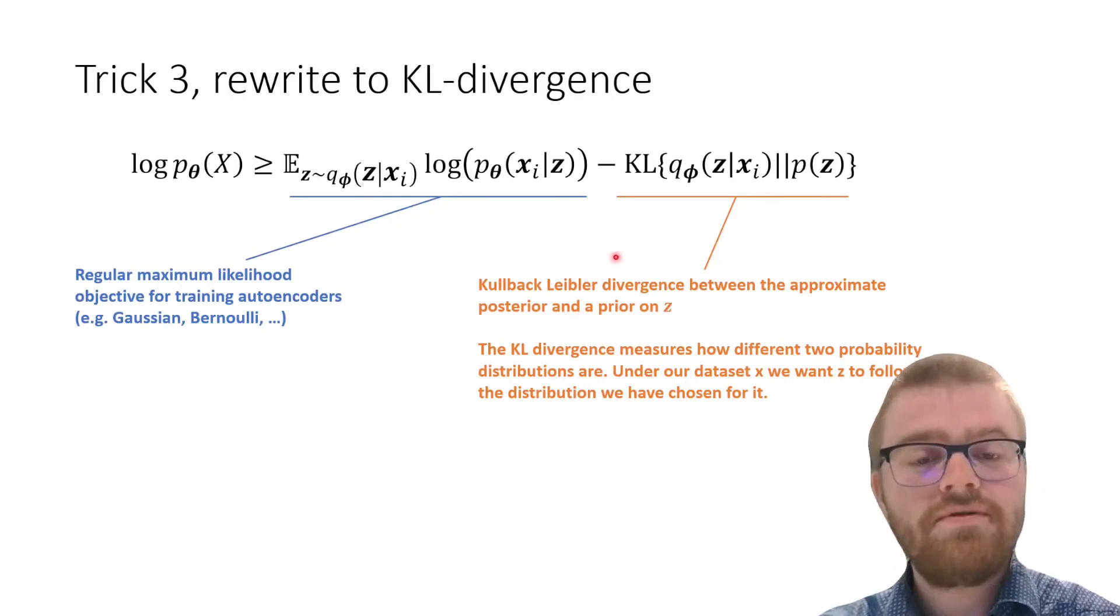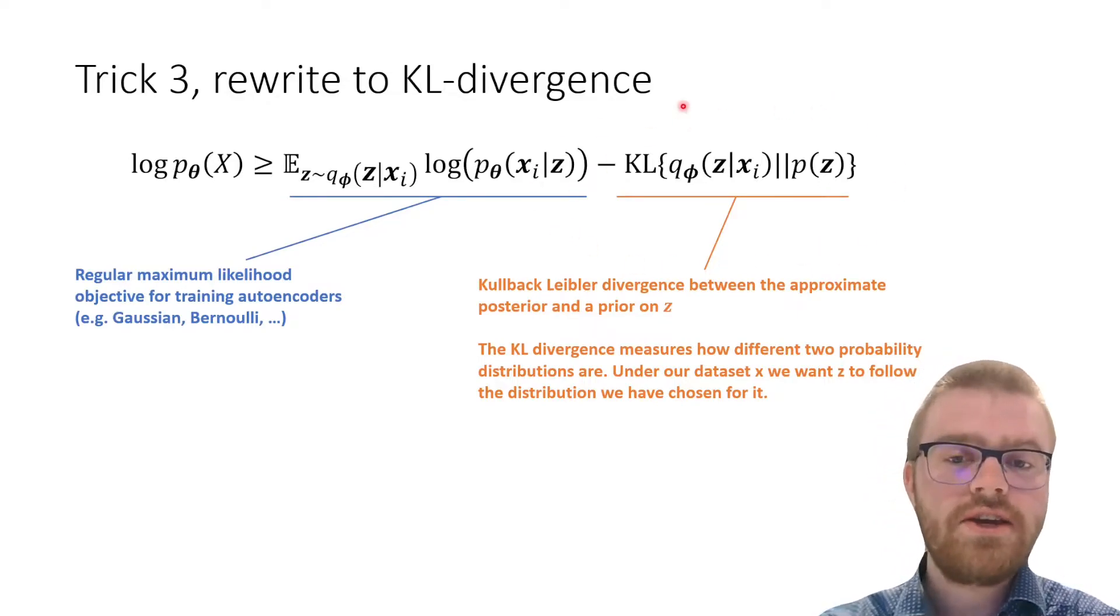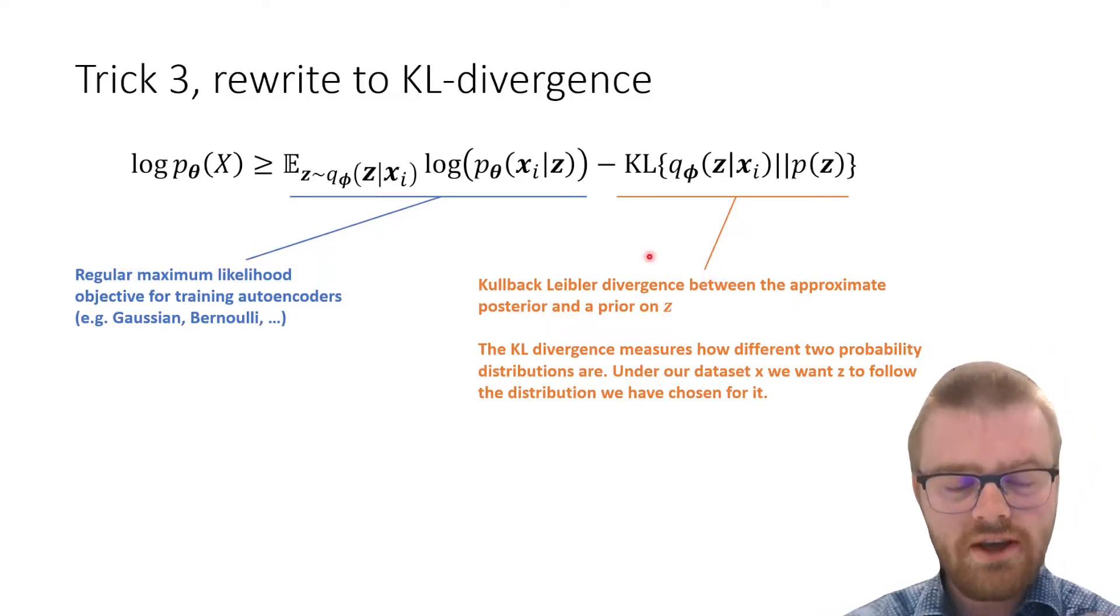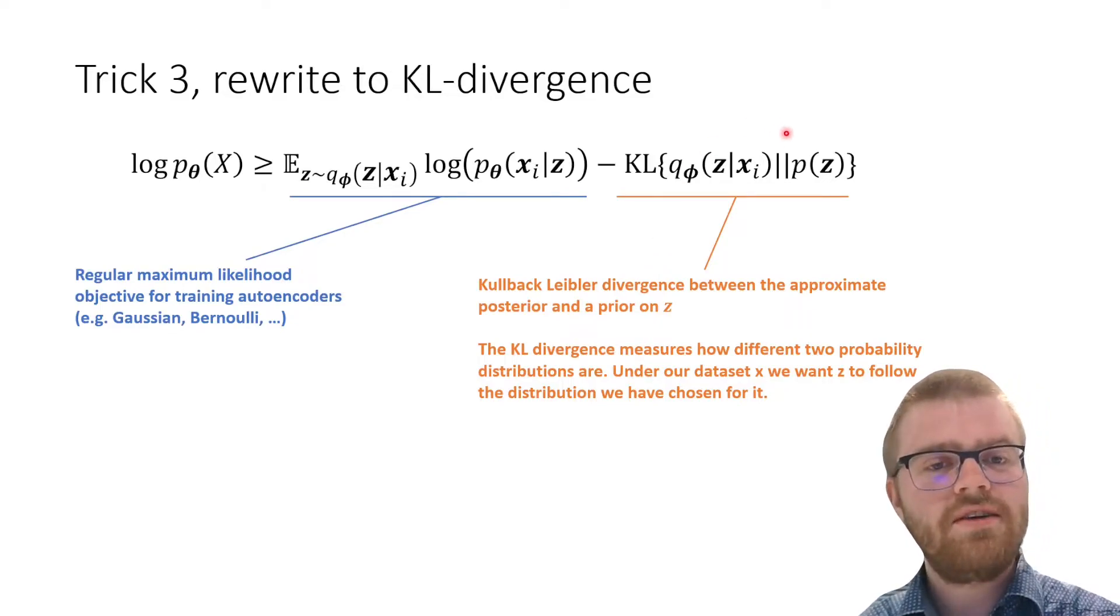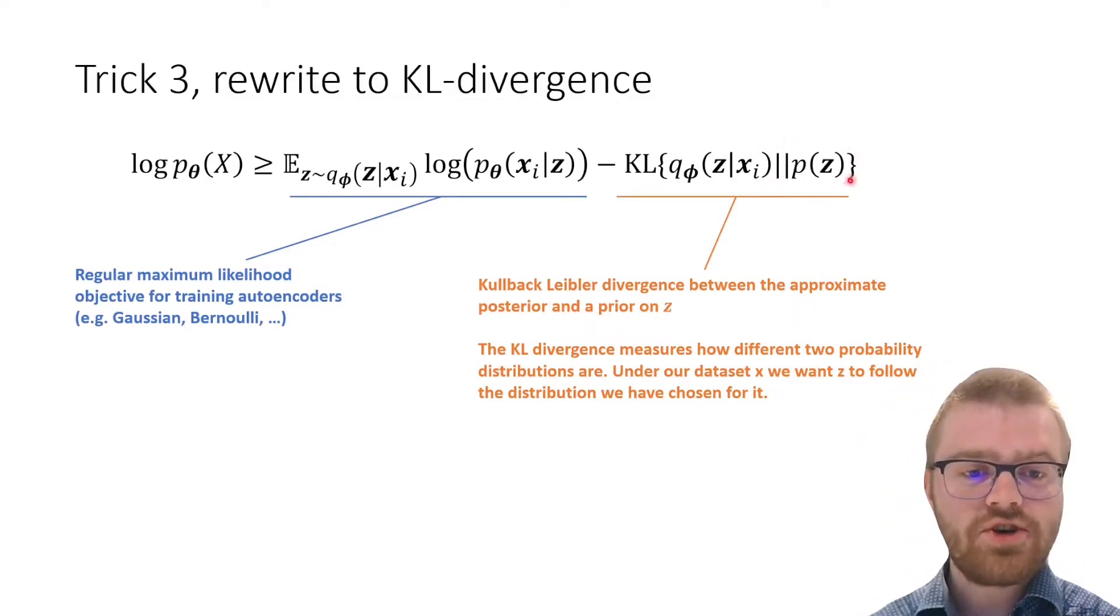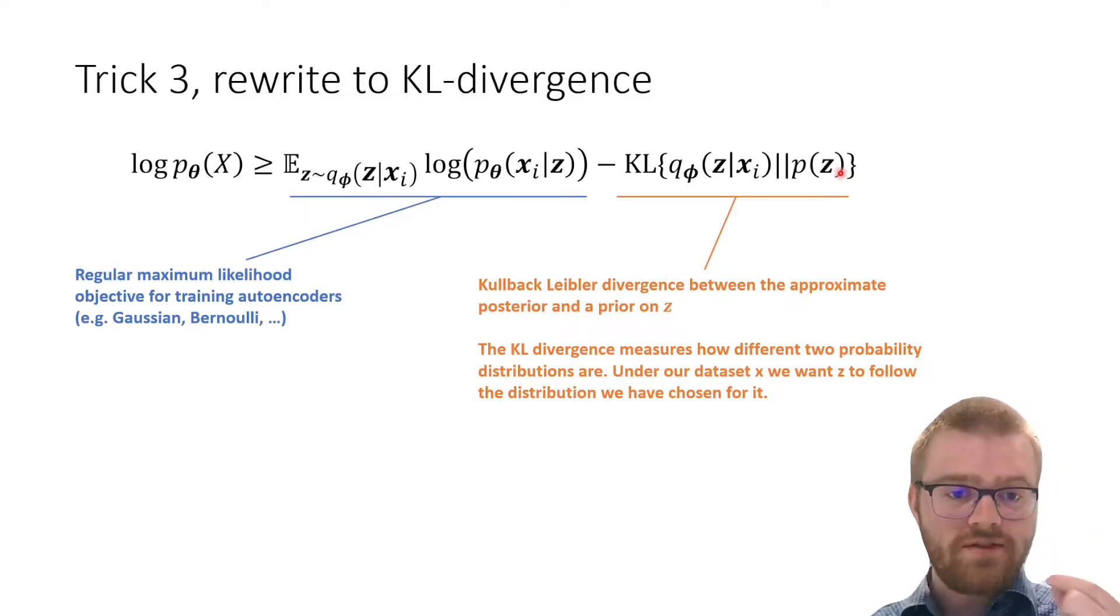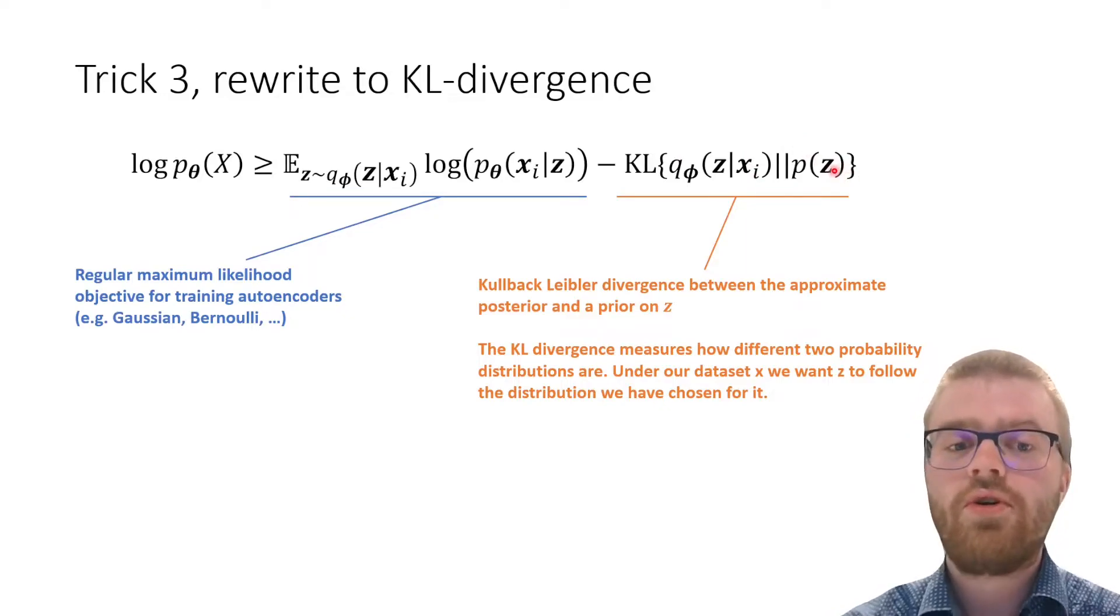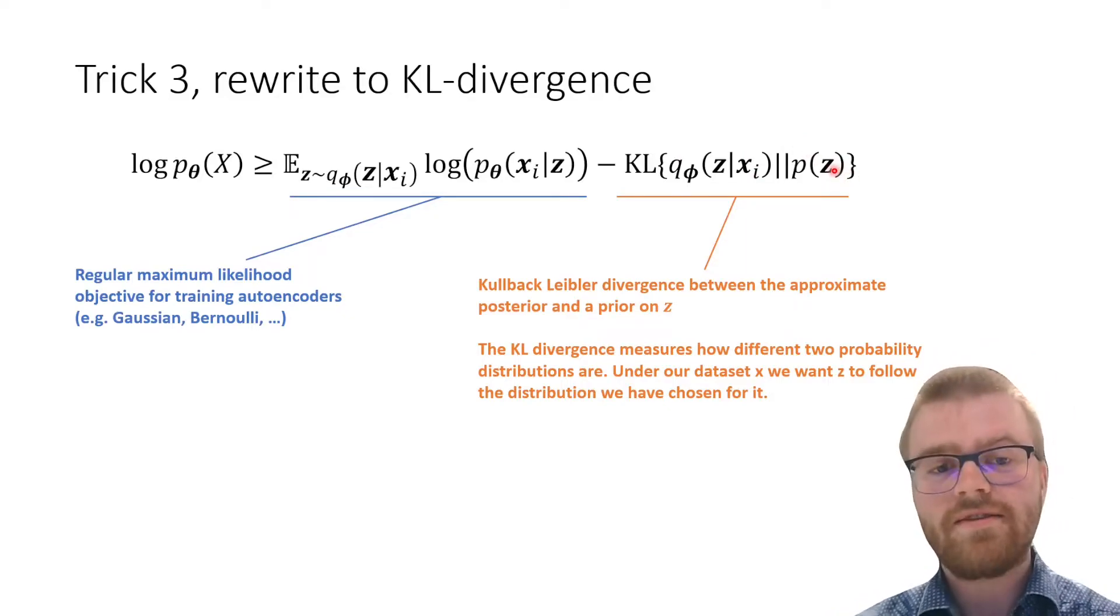Here on the right, however, we've got an extra regularization term on our autoencoder. This KL divergence measures the difference between two probability distributions. It's measuring the difference between the probability distribution as given by our encoder towards the freely chosen prior distribution of z. So for example, we choose z to be normal, then we also have to enforce that. We are enforcing that our encoder is going to create normally distributed latent codes.